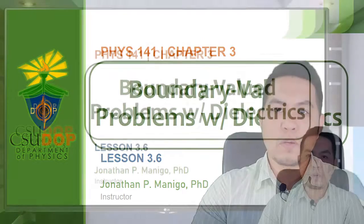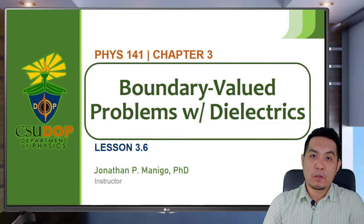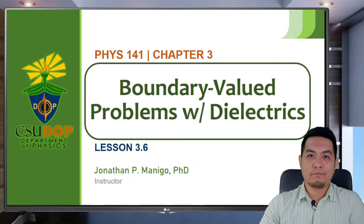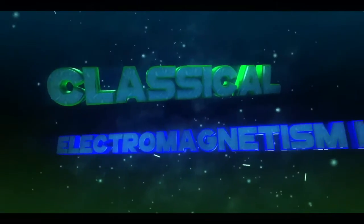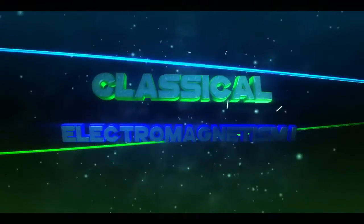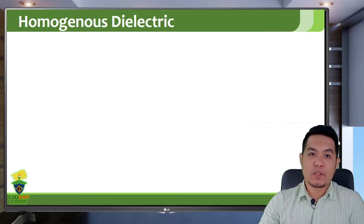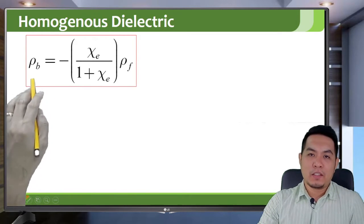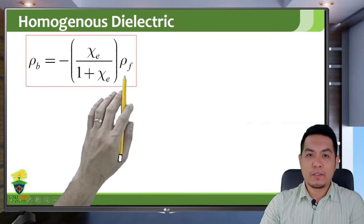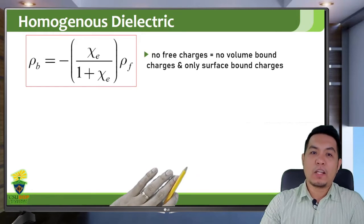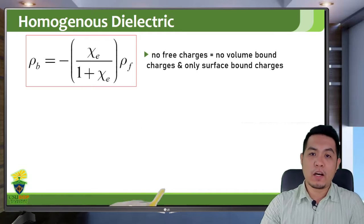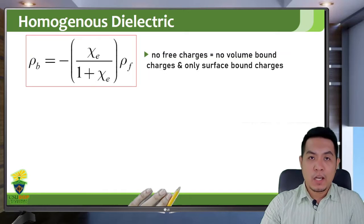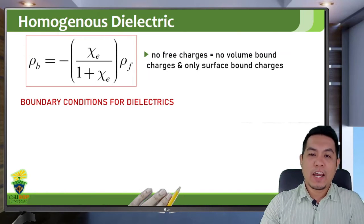For this chapter, we will be discussing boundary value problems and how to deal with these problems when dielectrics are involved. If you have a homogeneous dielectric, you can actually calculate the volume bound charges given the free charges in the configuration. Note that if there are no volume free charges, it only means there are no volume bound charges, but there can still be surface bound charges. For dielectrics, we will now establish two general boundary conditions.